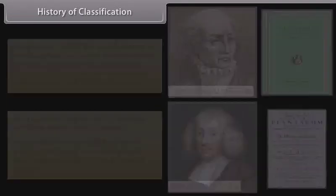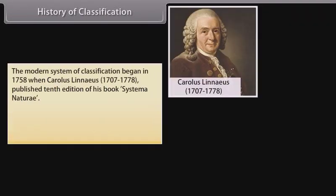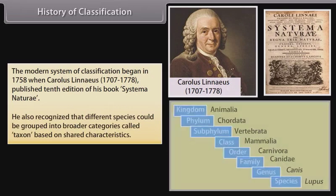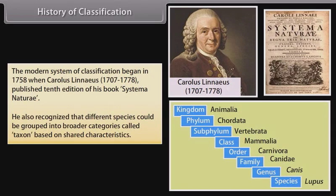The modern system of classification began in 1758 when Carolus Linnaeus (1707–1778) published the 10th edition of his book Systema Naturae. He also recognized that different species could be grouped into broader categories called taxa, based on shared characteristics.